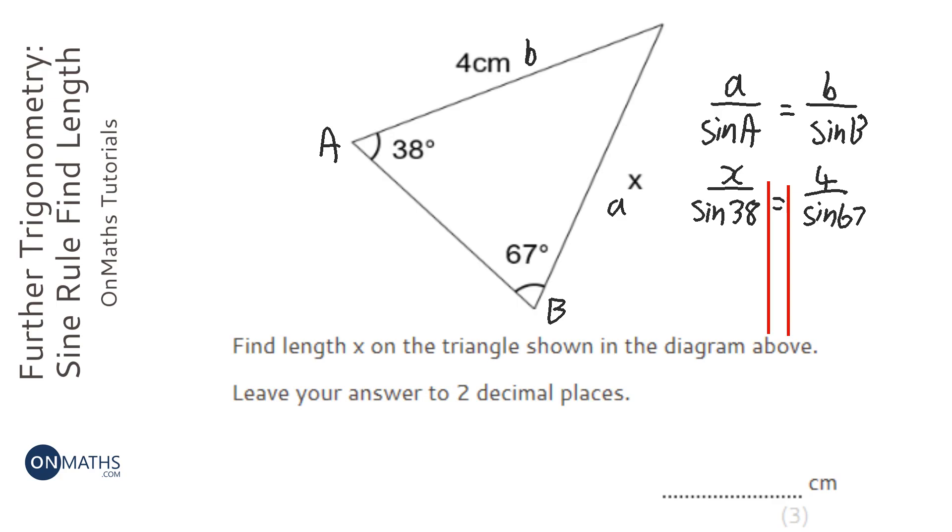So all we need to do is times both sides by sine 38. So x equals 4 sine 38 over sine 67.